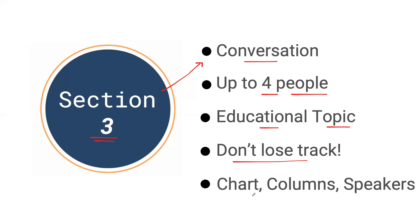It's best to make a chart with different columns for each speaker. This is a great way to organize information in section three because some questions might ask you to connect various ideas with different speakers, and it's difficult to remember all details. The chart note-taking system is a great way to go.